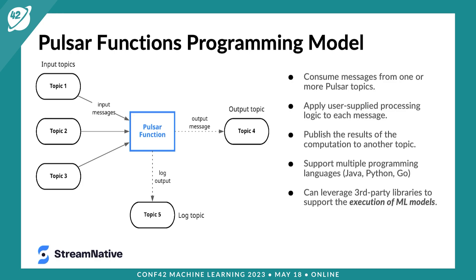Pulsar functions support multiple programming languages — we'll focus on Java today, but Python and Go are also fully supported. Critically, you can package third-party libraries into the function itself. So if you want to include a machine learning library, as we'll see in the example, you can do that and take full advantage of it inside your Pulsar functions. You don't need to set up a complex framework — you can just easily embed it.